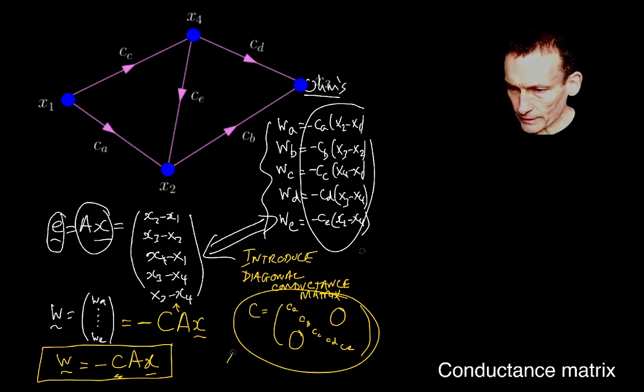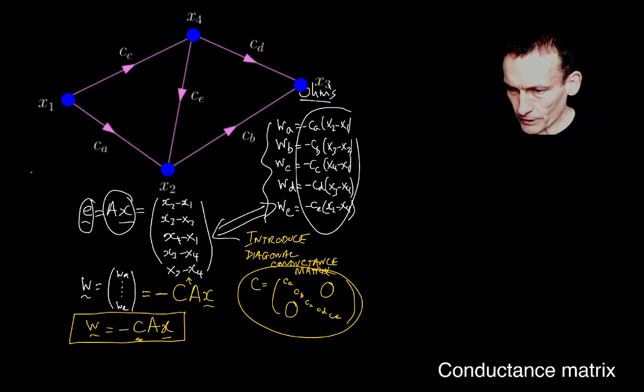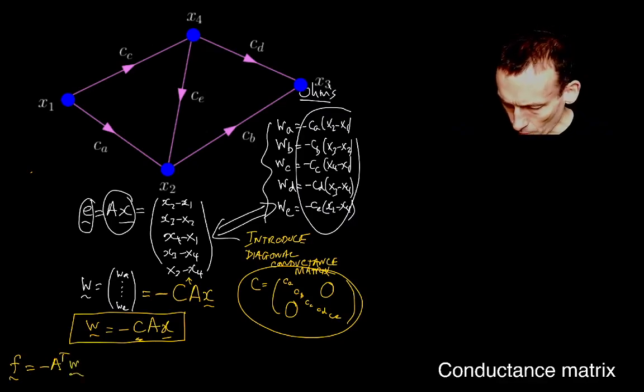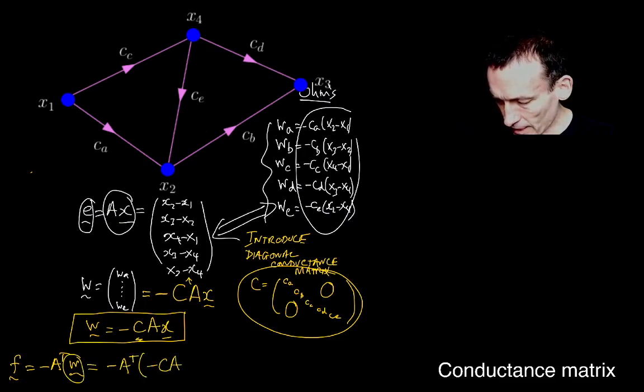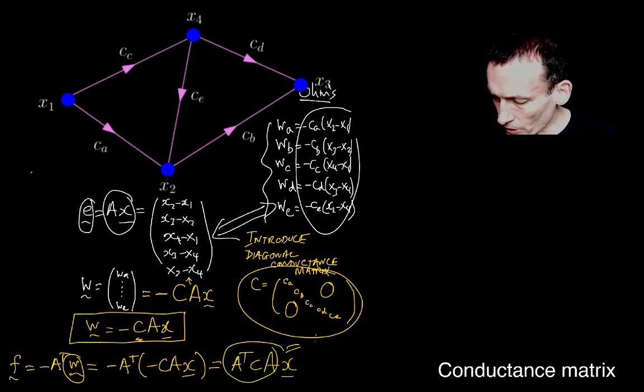And what it means is, let's just finish this off with another statement. Remember, my F now is the divergence of the currents. But we've now got a new expression for this. It's minus C, A times X. So, what I get now, the minus signs cancel, and I get A transpose C, A times X. And you know what? I'm still going to call that K.